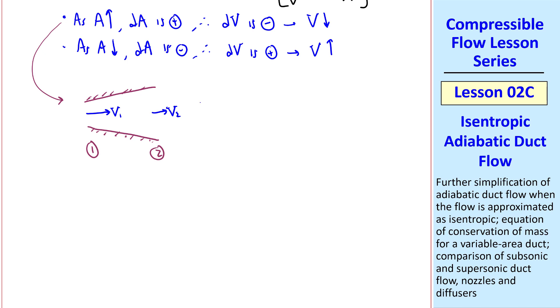And since A goes up, and because of this statement, V2 is less than V1 for subsonic flow. V down as A up. This is what we're used to in our study of incompressible flow, where we know that speed goes down as area goes up in an incompressible flow.